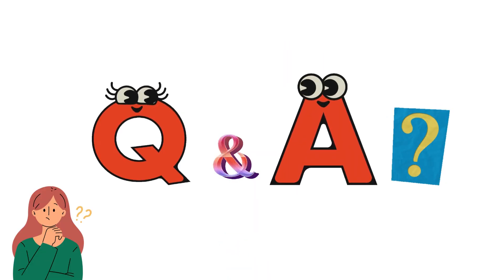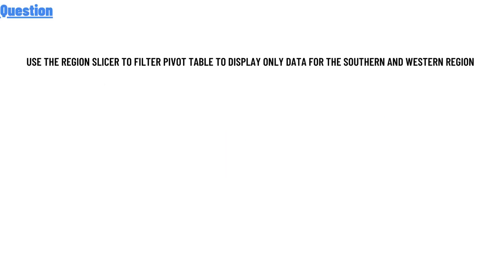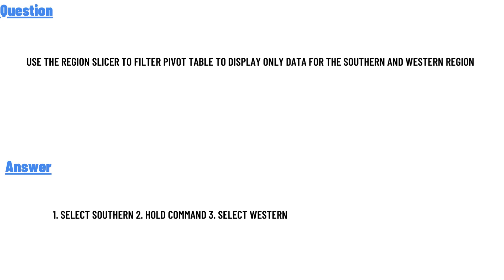Today's question is: use the region slicers to filter the pivot table to display only data from the Southern and Western regions. The correct answer is: first select Southern, then hold Command, then select Western.